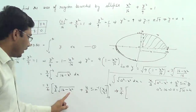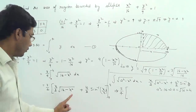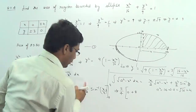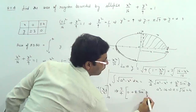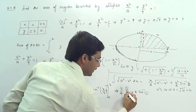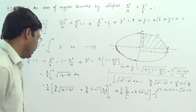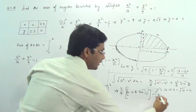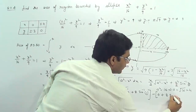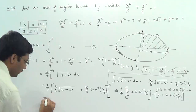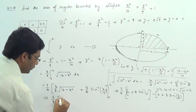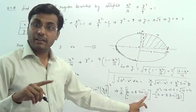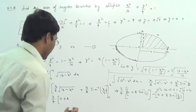Plugging in the upper limit x = 4: (4/2)√(16 − 16) = 0, since √0 = 0. Then plus 8 × sin⁻¹(4/4) = 8 × sin⁻¹(1). Since sin(π/2) = 1, sin⁻¹(1) = π/2, so this gives 8 × π/2.